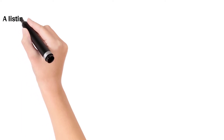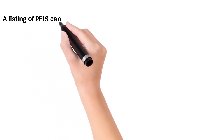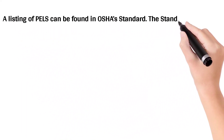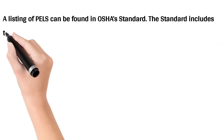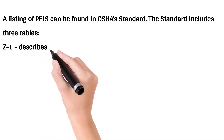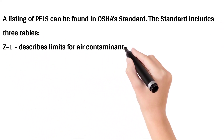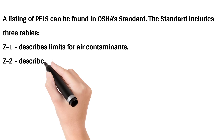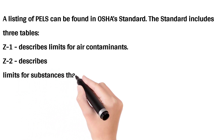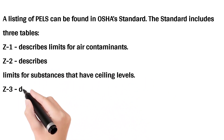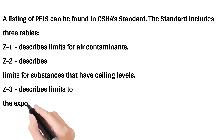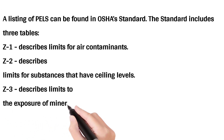A listing of PELs can be found in the OSHA standard. The standard includes three tables: Z1 describes limits for air contaminants, Z2 describes limits for substances that have ceiling levels, and Z3 describes limits to the exposure of mineral dust.